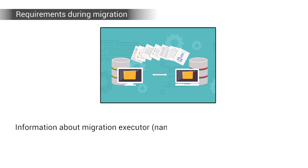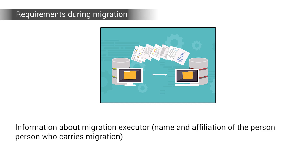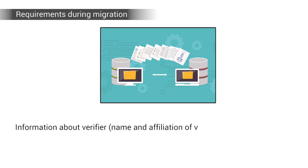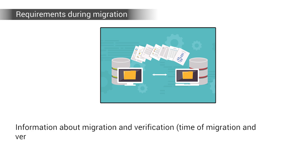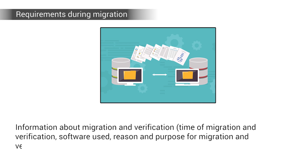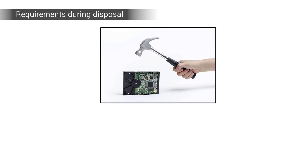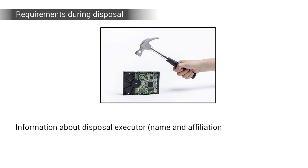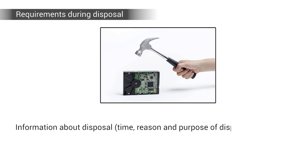Requirements during migration: information about the migration executor — the name and affiliation of the person who carries out the migration. Information about the verifier — the name and affiliation of the verifier. Information about migration and verification — that is, the time of migration and verification, software used, and reason and purpose for migration and verification. Finally, requirements during disposal: information about the disposal executor — the name and affiliation of the disposal executor — and information about disposal, that is, the time, reason and purpose of disposal. These are all very important as far as electronic documents are concerned.